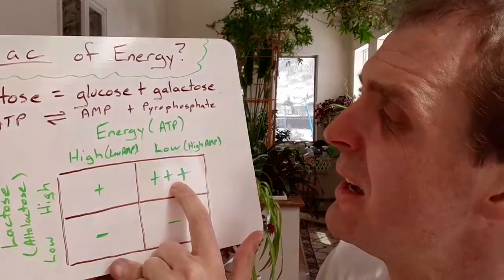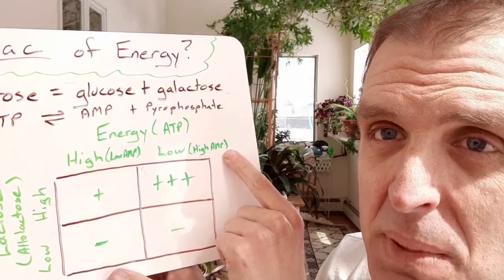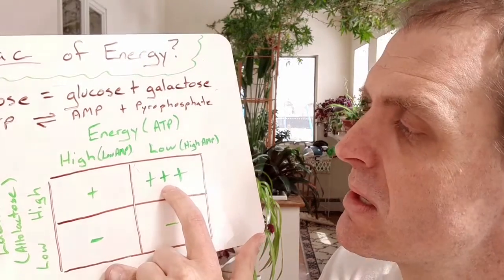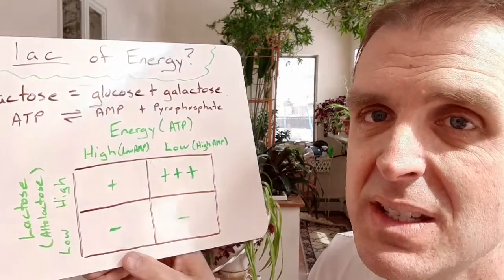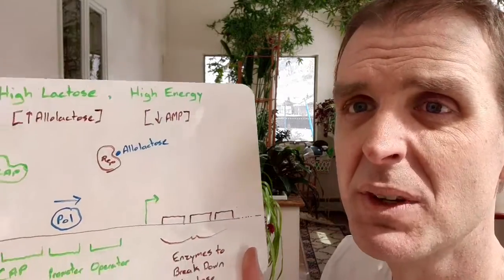In contrast, if the energy in the cell is low, and if the energy is low, then AMP is high, the cell will want to make lots and lots of these enzymes that could help break down lactose so that we can get some glucose so that we can get the cell making some energy. So I have all four of those scenarios drawn out, and we'll walk through those, and we're just going to walk through the logic for each one.